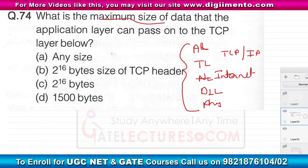So the application layer can pass any size of data to the transport layer in the TCP/IP protocol. The answer is: any size.